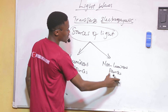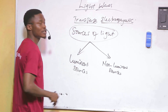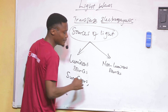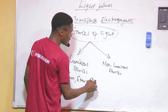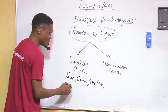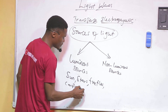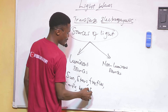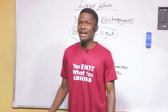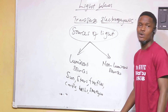Examples of luminous sources — remember they can be natural or artificial — include the Sun, stars, fireflies, candles, light bulbs in your house, and street lights. These examples include both natural and artificial sources. What makes them luminous is that they produce their own light.